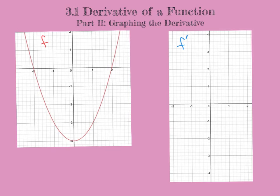Welcome to part 2 of 3.1. In this video, we are going to be graphing the derivative given the graph of the original function f. We have to understand what the derivative means. The derivative is the slope, the instantaneous slope, the instantaneous rate of change — it's how our graph is changing at any given point.